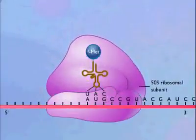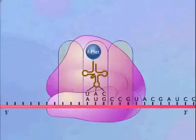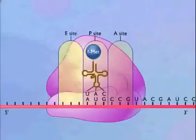Proteins called initiation factors are also involved but are not shown. The 70S ribosome has two sites to which transfer RNA-carrying amino acids can bind. One is called the peptidyl, or P-site, and the other is called the acceptor, or A-site. There is also a third site called the exit, or E-site, where transfer RNAs are released.